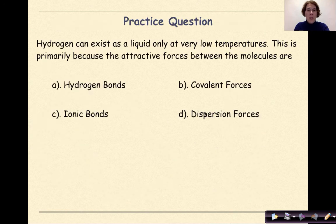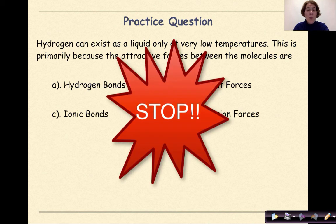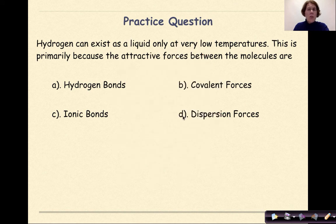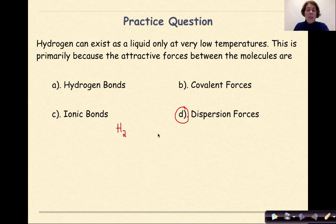Practice question: Hydrogen can exist as a liquid only at very low temperatures. This is primarily because the attractive forces between the molecules are: hydrogen bonds, ionic bonds, covalent bonds, or dispersion forces? The answer is dispersion forces. Hydrogen exists as diatomic H₂, represented as H–H. Because this is a nonpolar molecule, the only type of intermolecular force of attraction that applies here are dispersion forces.